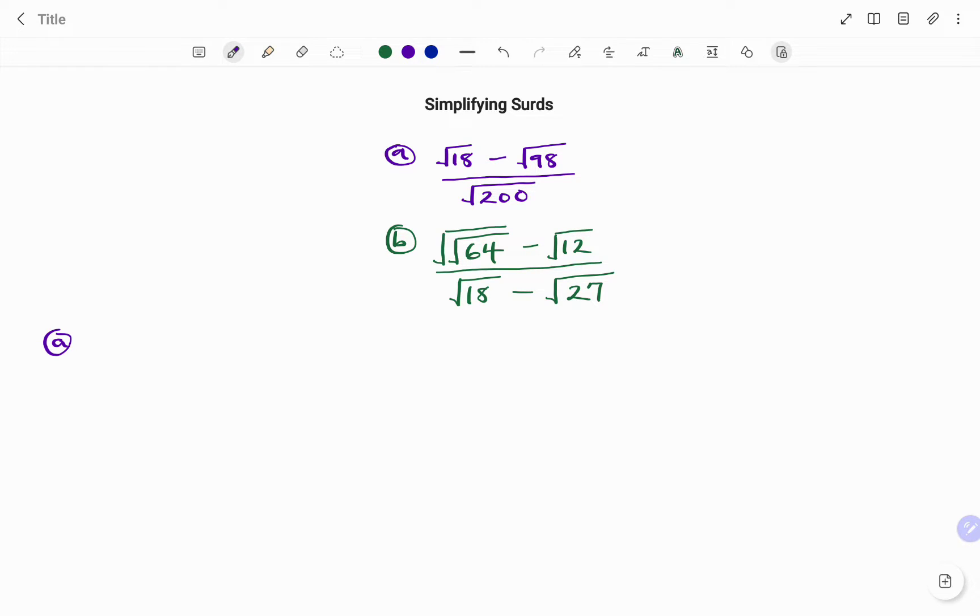In the first example, we have root 18 minus root 98 divided by root of 200. The first step is to break down the value under our root into products of its factors, such that one of the factors must be a perfect square.